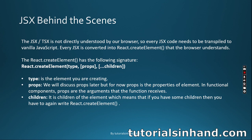The React.createElement method has the following signature: it takes type, props, and children. Type is the element you are creating. Props are the properties of the element — in functional components, props are the arguments the function receives. Children are the child elements; if you have nested elements, you write another React.createElement call, and if you have a simple string as a child, you can write it directly.